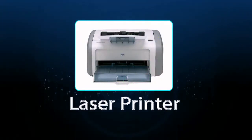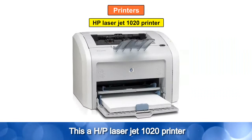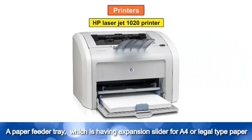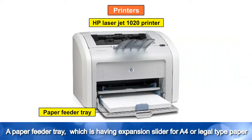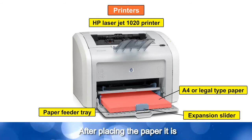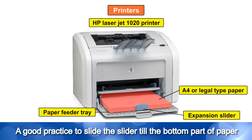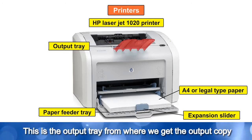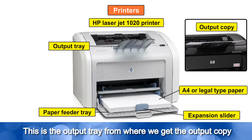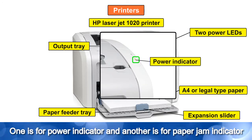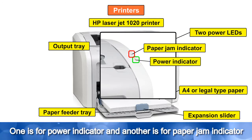This is an HP LaserJet 1020 printer. You can see it has a paper feeder tray with an expansion slider for paper adjustment. After placing the paper, it is good practice to slide the slider till the bottom part of the paper. This is the output tray from where we get the output copy. There are two power LEDs — one is a power indicator and another is a paper jam indicator.